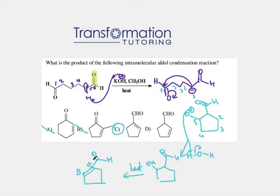Remember, the product of an aldol condensation has a double bond, then single bond, then C=O — it's called an alpha-beta unsaturated carbonyl compound. If you look at D, we have double, single, single, and then C=O, so that pattern is wrong and can't be the product of an aldol condensation. We could have actually eliminated D right away based on that alone.